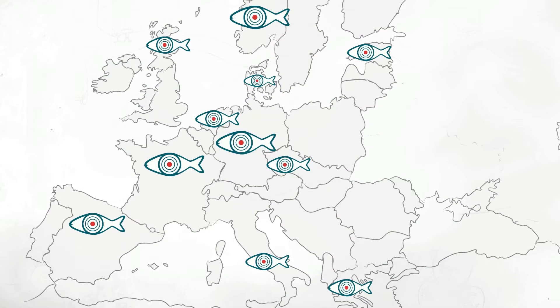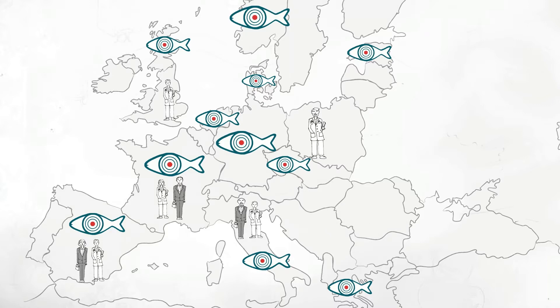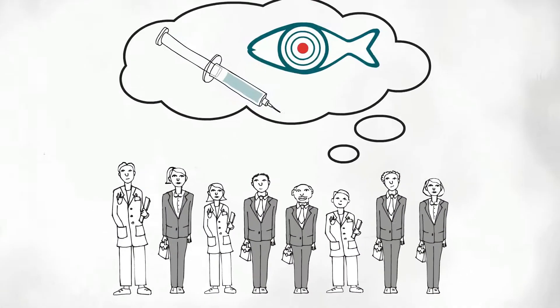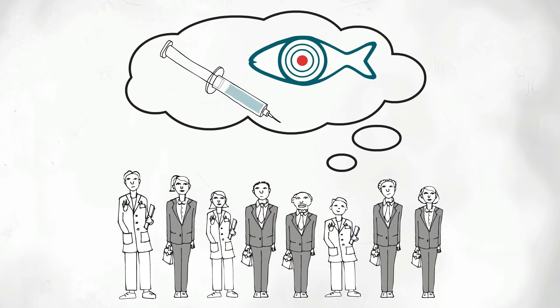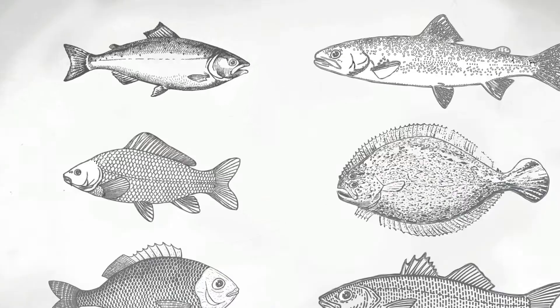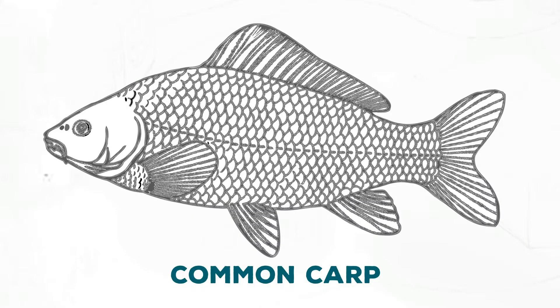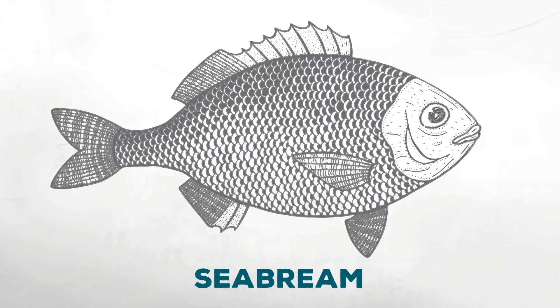TargetFish brought together leading European research groups and commercial companies from different European countries to optimize existing, although not sufficient, vaccines and develop new vaccination strategies against different viral or bacterial pathogens for different farm species including Atlantic salmon, rainbow trout, common carp, sea bass, sea bream, and turbot.